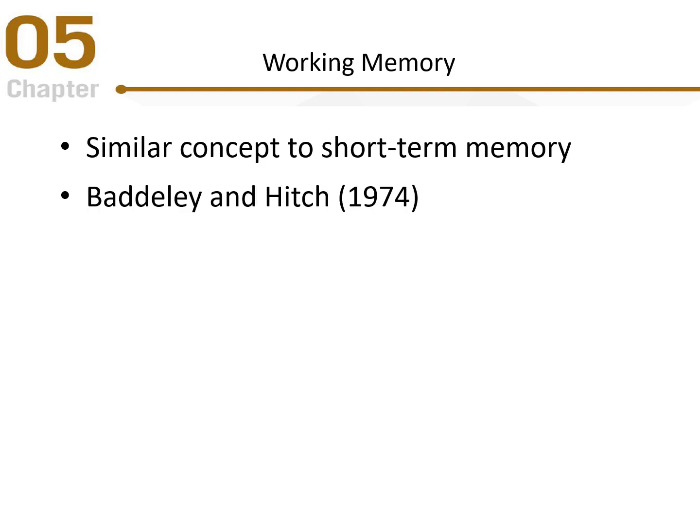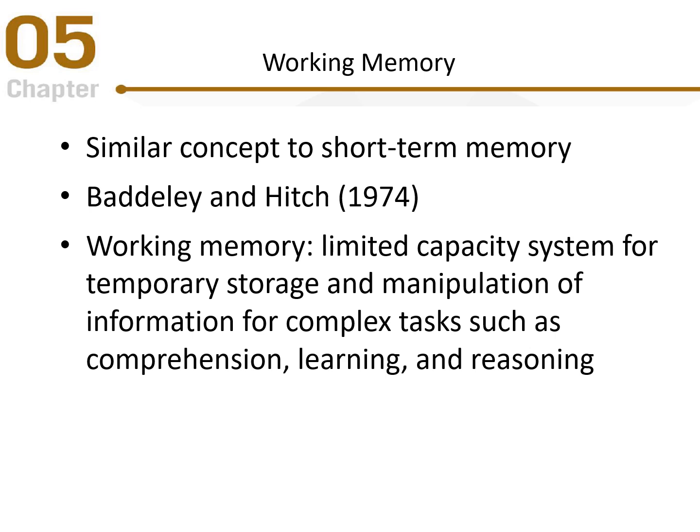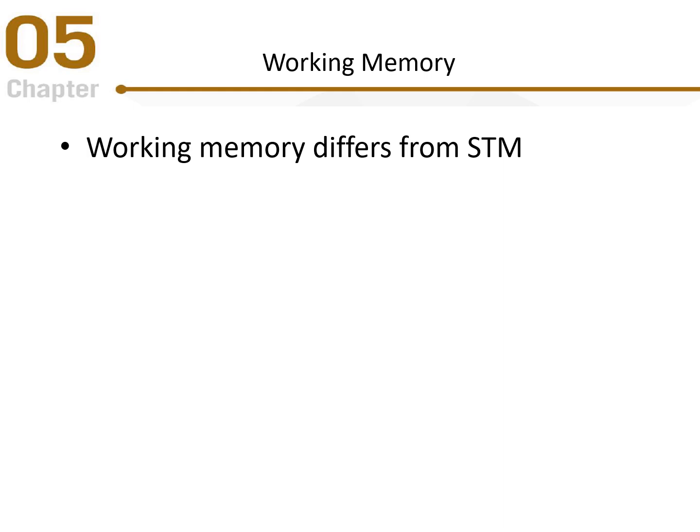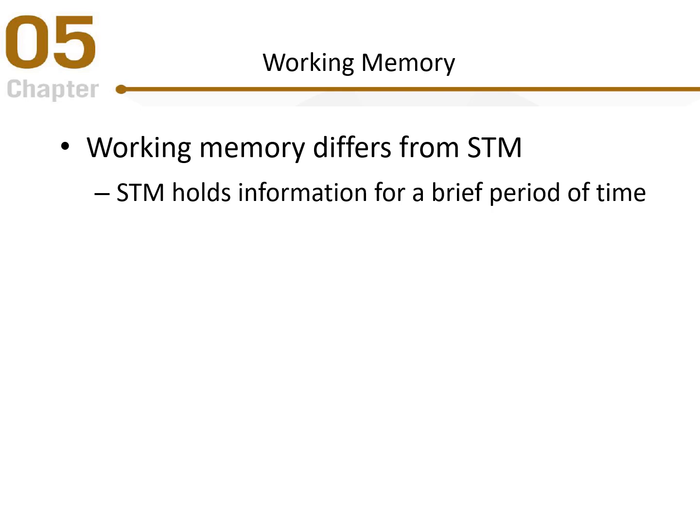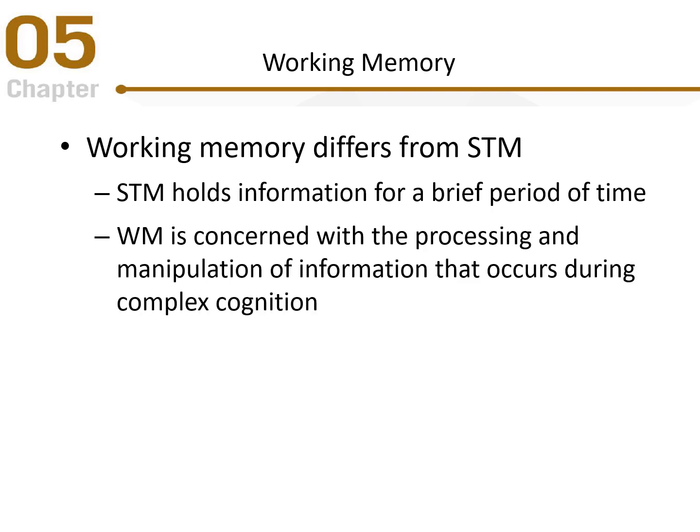Working memory is a similar but distinct concept from short-term memory, developed by Baddeley and Hitch in 1974. They defined working memory as a limited capacity system for temporary storage — like short-term memory — but also proposed that manipulation of information for complex tasks such as comprehension and reasoning could happen here. While short-term memory simply holds information briefly, working memory is more concerned with the processing and manipulation of information during complex cognitive tasks.